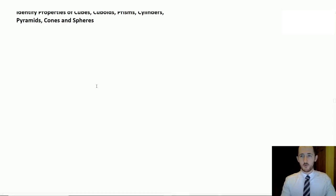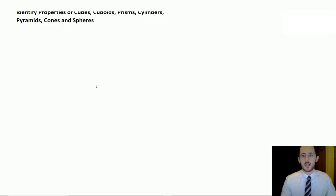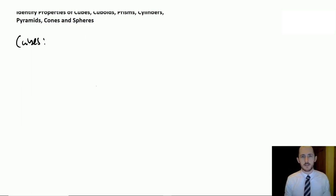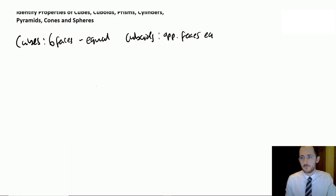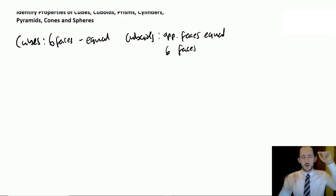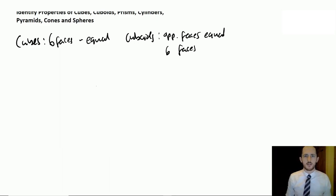Now 3D shapes: identify properties of cubes, cuboids, prisms, cylinders, pyramids, cones and spheres. A cube has 6 equal faces, 8 vertices and 12 edges. A cuboid also has 6 faces and 8 vertices, but opposite faces are equal rather than all faces being equal. Just imagine it in your head to count the vertices and edges.